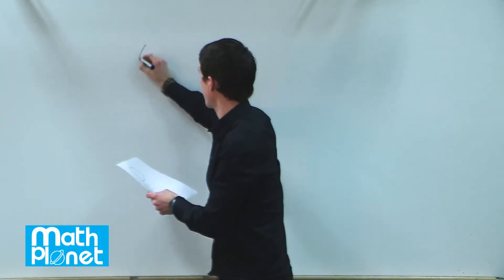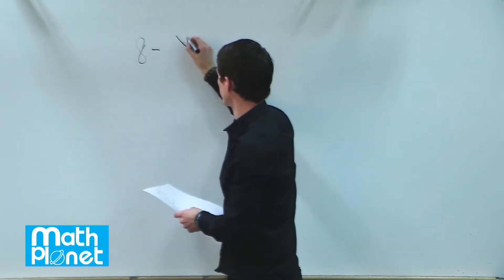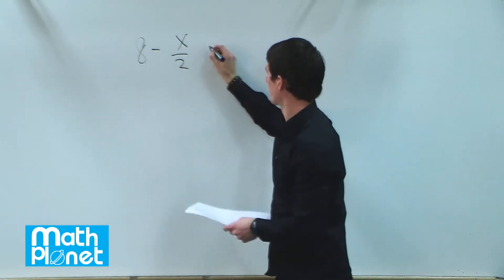Here we have an inequality that we want to solve for x. That inequality is 8 minus x over 2 is greater than 9.